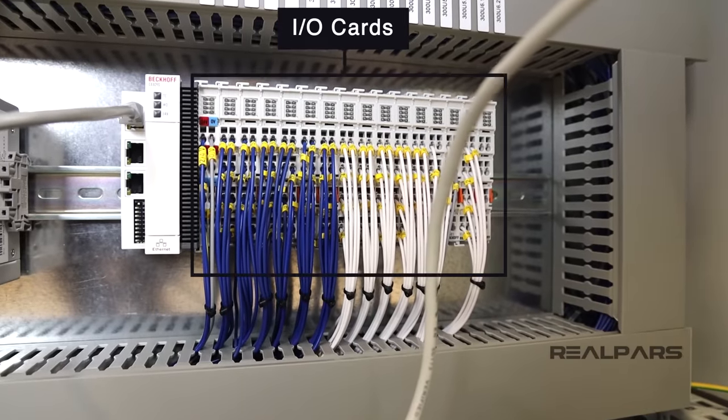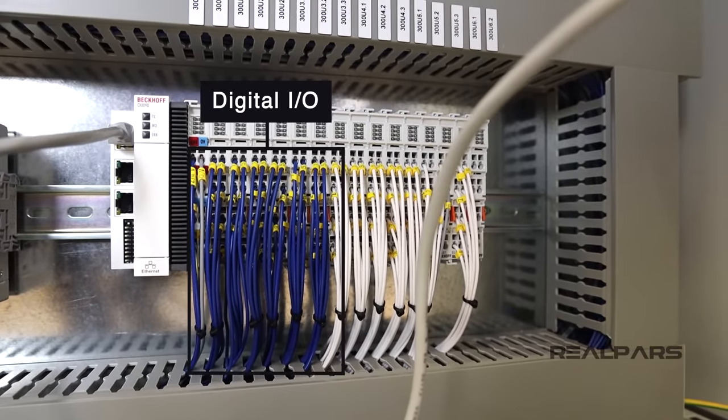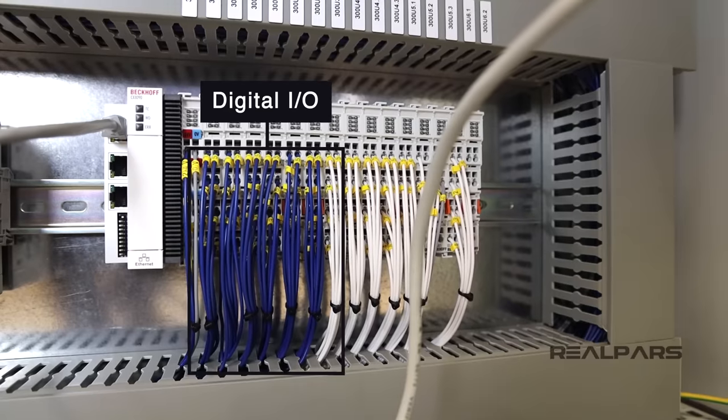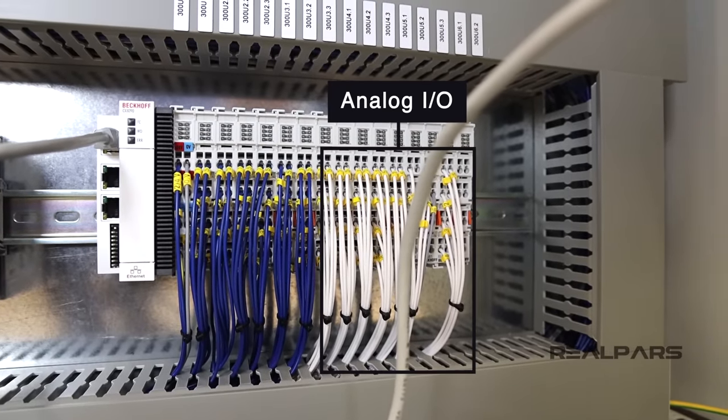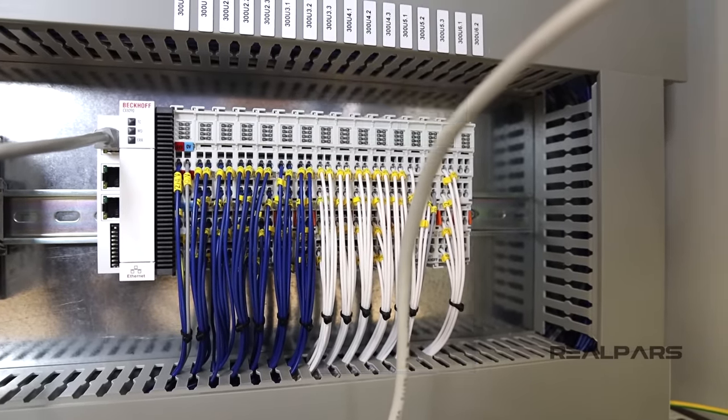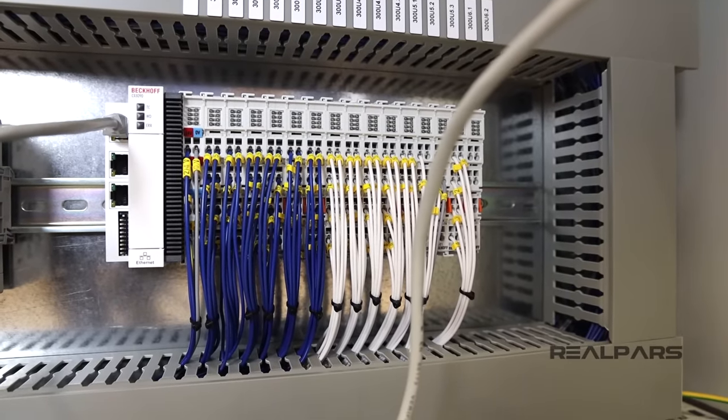Next, we have the input and output cards. Of these cards, those with blue wires are digital input and output cards, and those with the white wires are analog input and output cards. So you see that we use separate cards for digital and analog signals.